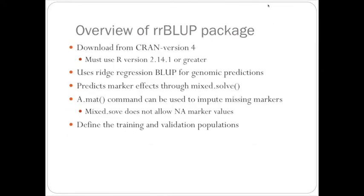So, just a little overview of the ridge regression BLUP package. For the package to work, you must be using R version 2.14.1 or greater. And I recommend using the latest version of the package, which is version 4, which came out in September. For the code that I'm presenting today, you will be needing to use the version 4 package for the imputation, and must be using the R version 2.14.1 or greater.